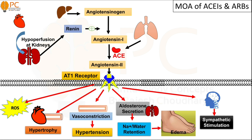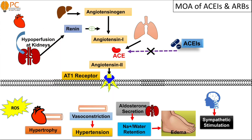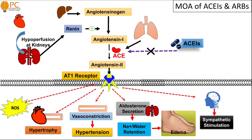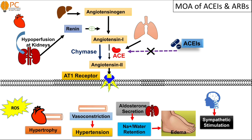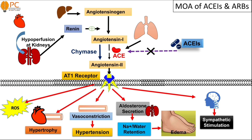ACE inhibitors — such as captopril, enalapril, and ramipril — inhibit the activity of ACE enzyme, decreasing the production of angiotensin 2 and minimizing its effects. However, in the long term, angiotensin 2 can also be produced from the chymase enzyme, so the effect of angiotensin 2 may still increase. Therefore, angiotensin receptor blockers (ARBs) are a better option for long-term management.